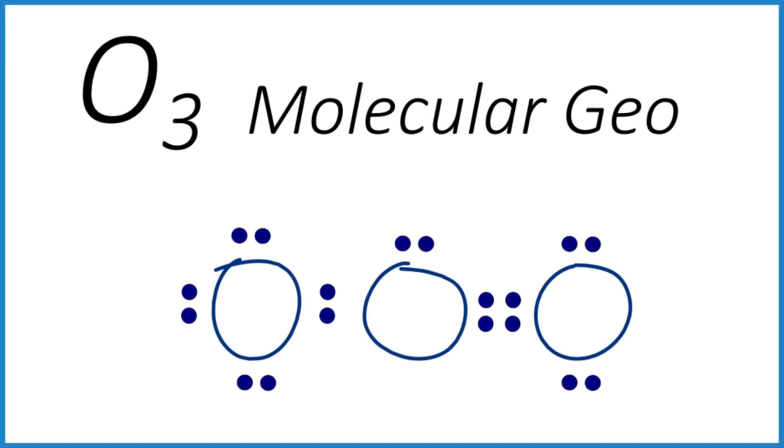Let's take a look at the molecular geometry for ozone, O3. The first thing we need is a valid Lewis structure, and that's right here.